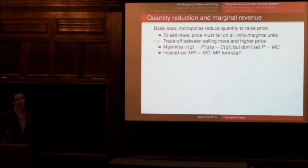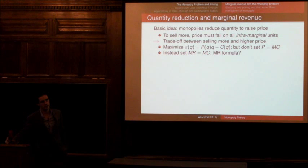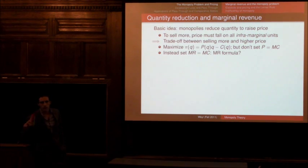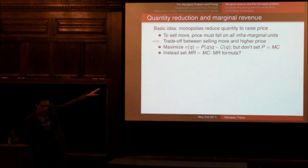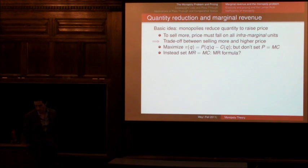Could you tell me what the formula for marginal revenue is? For marginal revenue? It's the derivative of total revenue with respect to quantity. But in terms of the price, the demand function and quantity? So it should be... in terms of p of q times q, we have to take the derivative: p plus p prime times q. Yeah, so that's the formula for marginal revenue.